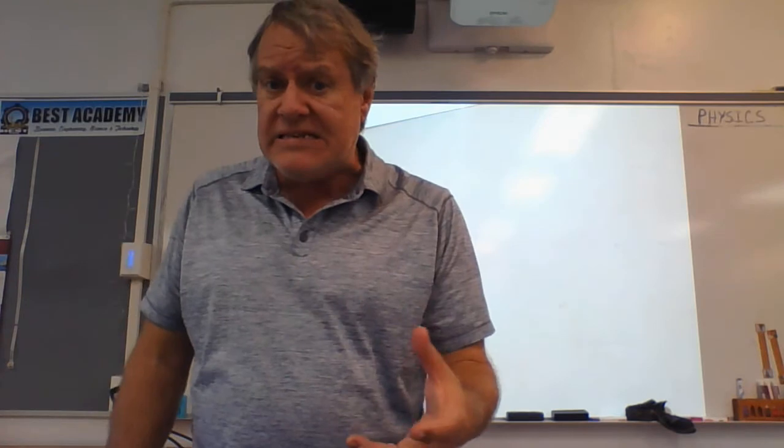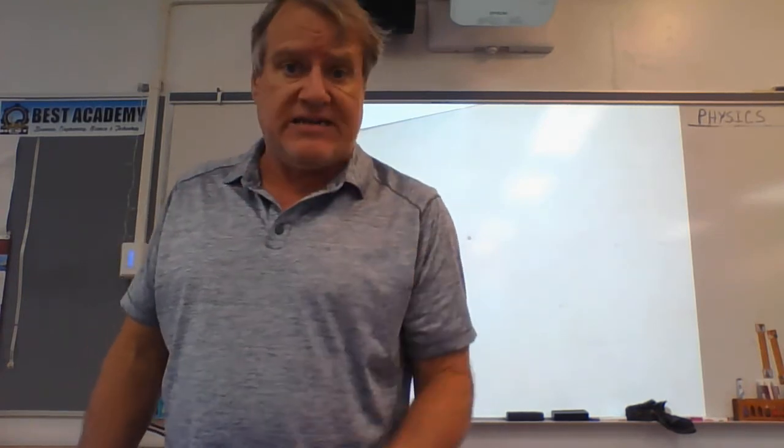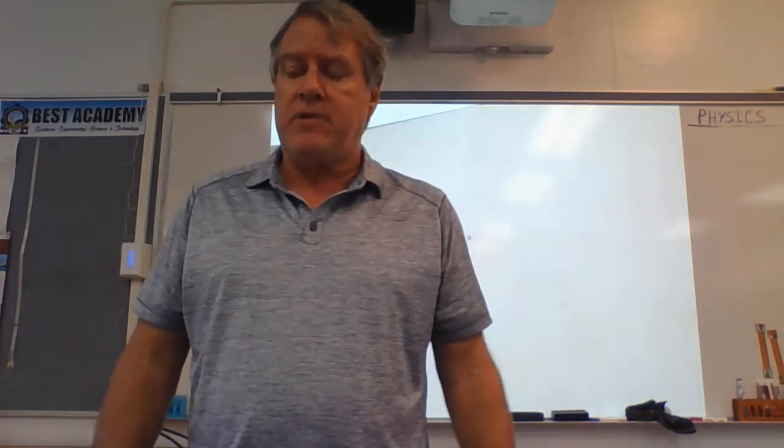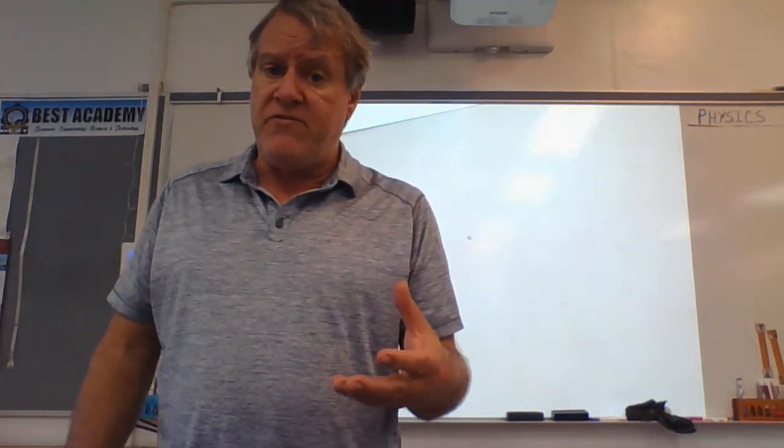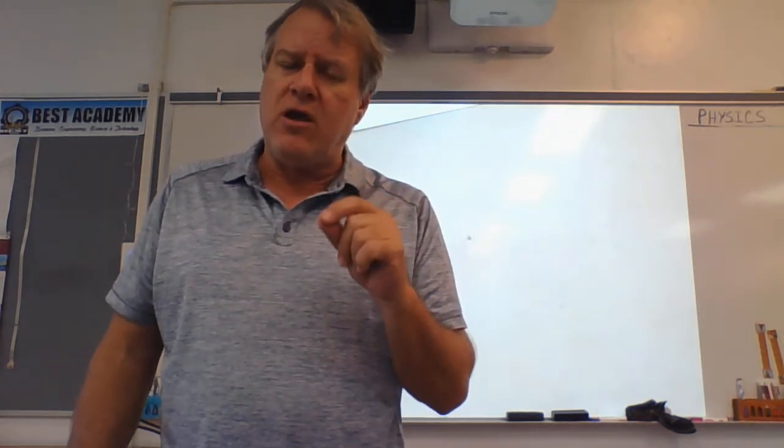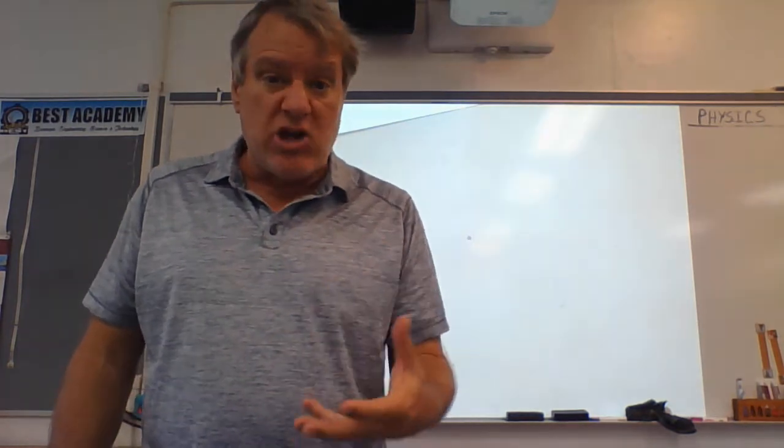Remember, for addition and subtraction, it's the least number of decimal places. That's what makes a number weak, or the more zeros it has if it doesn't have any decimals. Those are weaker numbers. For multiplication and division, the rules change. So you have to look at what we call the number of sig figs in the measurements.